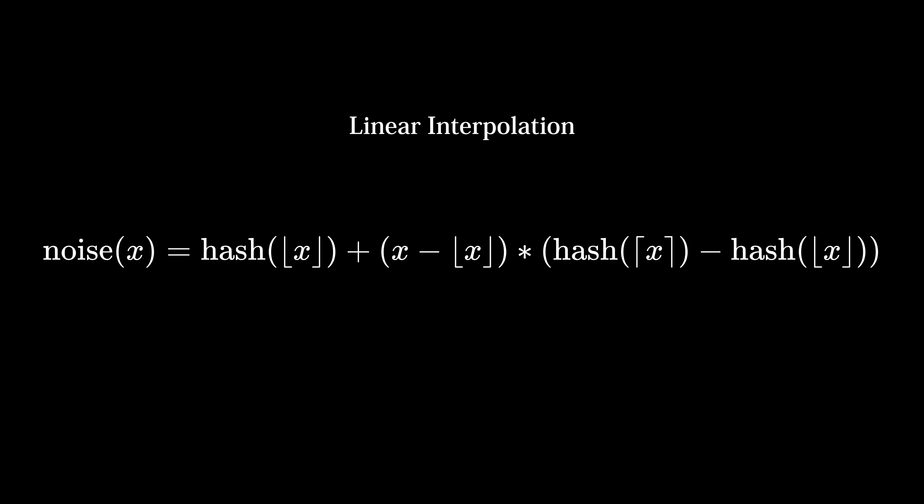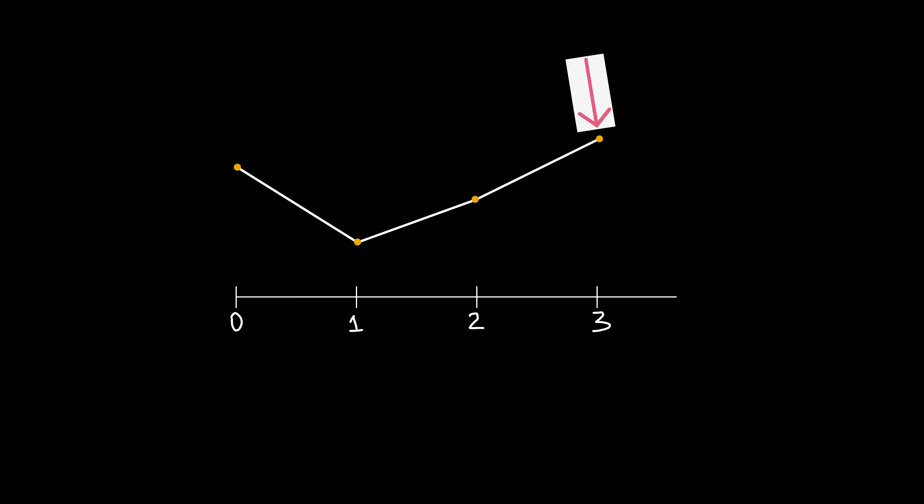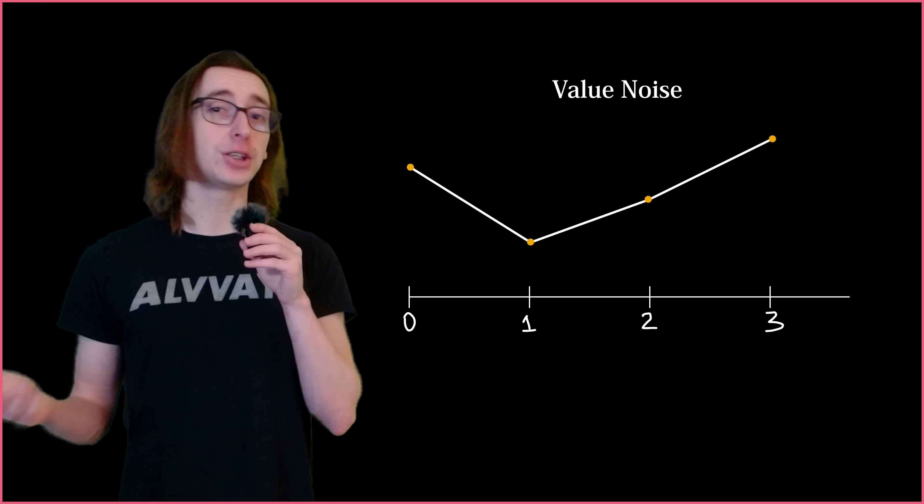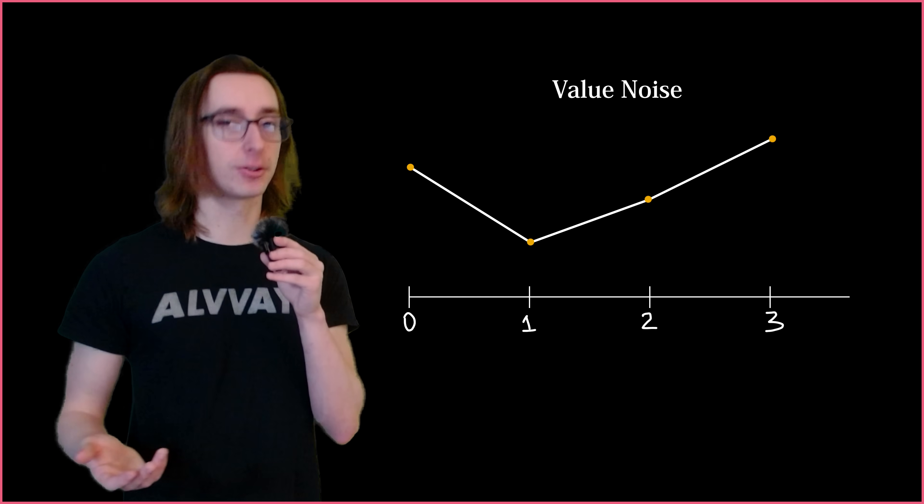This formula is known as linear interpolation, and I will be referring to it as lerp from now on. By lerping between the whole number hashes, we have satisfied our needs. Samples of the noise that are close together in space have similar results. This is called value noise, and it looks like shit. Thankfully, we can make a few improvements.